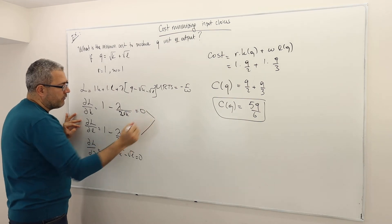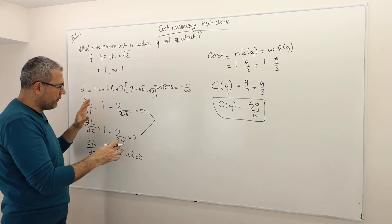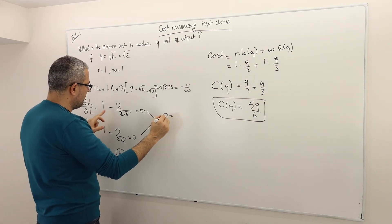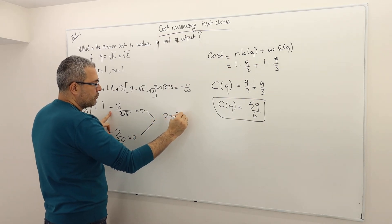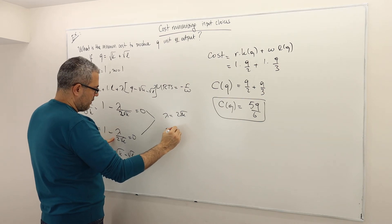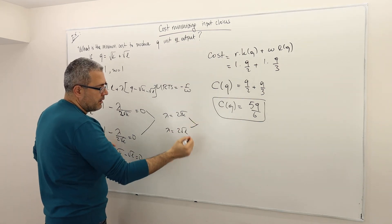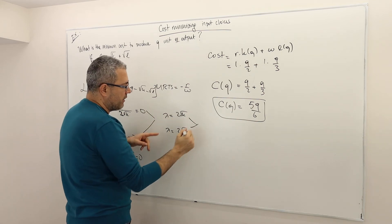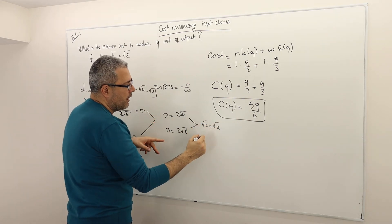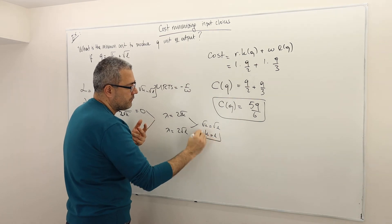I don't care about lambda, so I eliminate it. From the first condition, lambda equals 2√K. From the second, lambda equals 2√L. Setting them equal, the 2s cancel: √K equals √L. Taking the square of both sides gives K equals L.